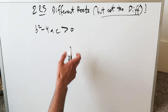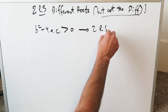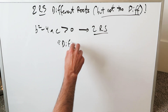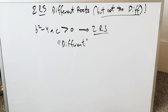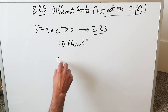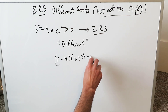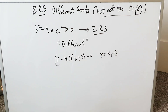b squared minus 4ac greater than 0 represents two real solutions because you have two different roots. The key word here being 'different,' but what really is different can be a matter of degrees. Consider these two examples: x minus 4 times x plus 3 equals 0, x is equal to 4, minus 3 — two real solutions, they're different.